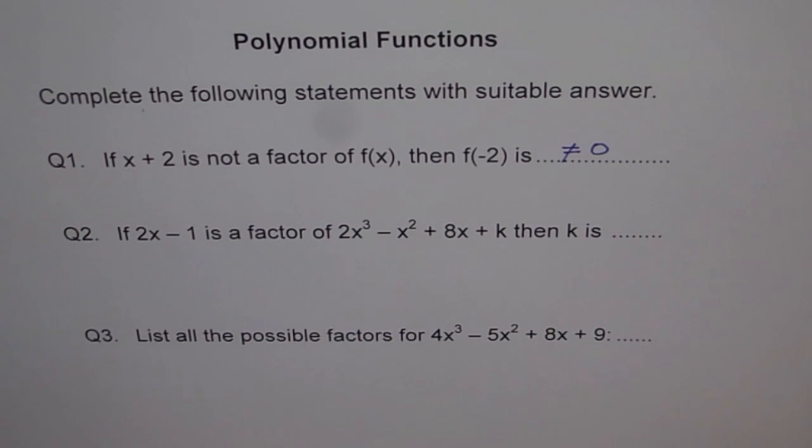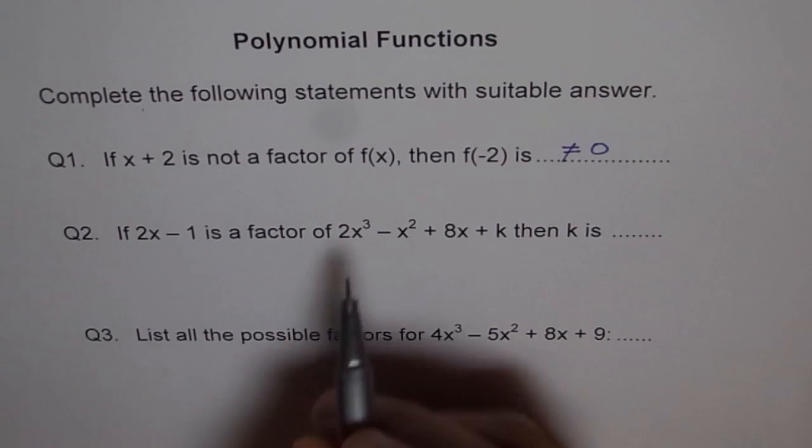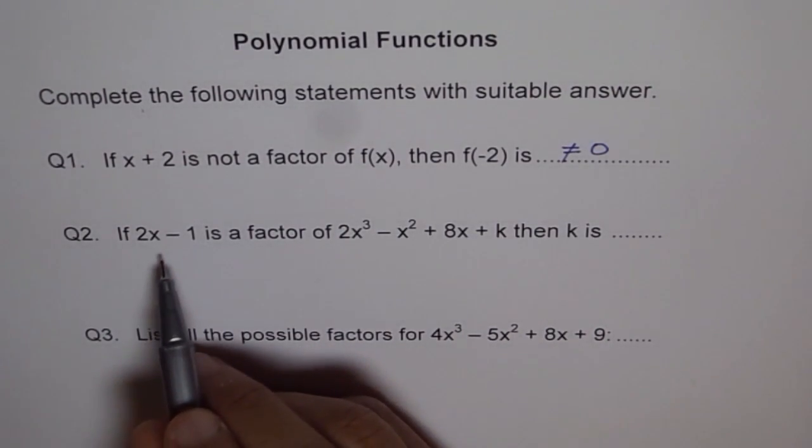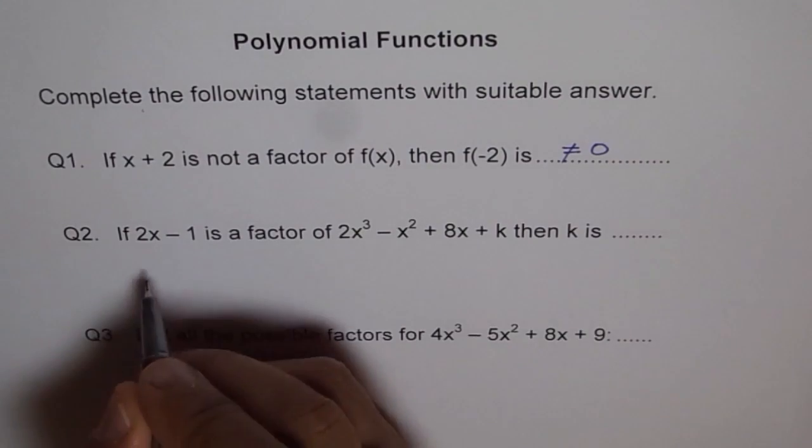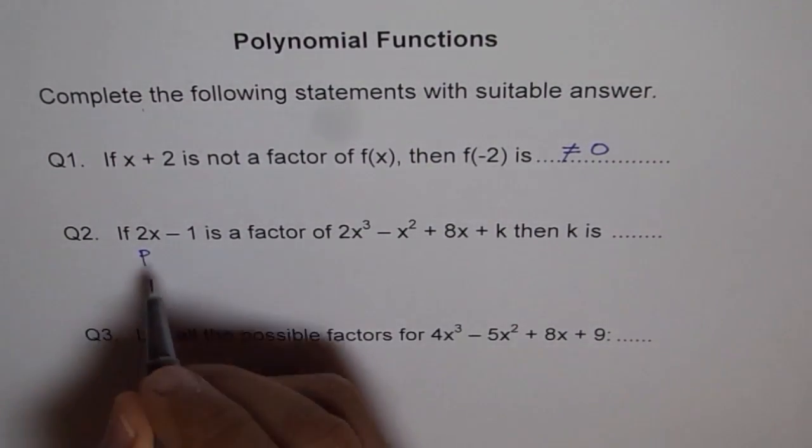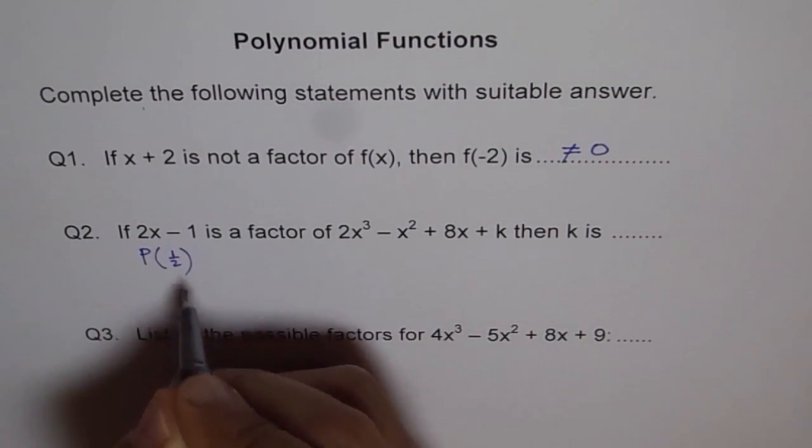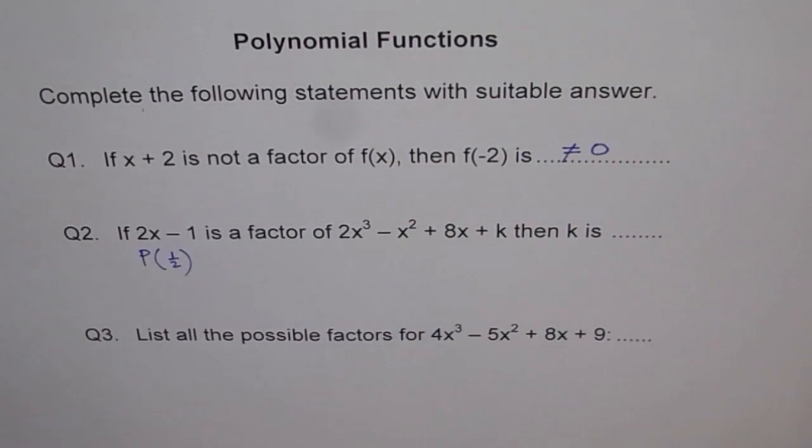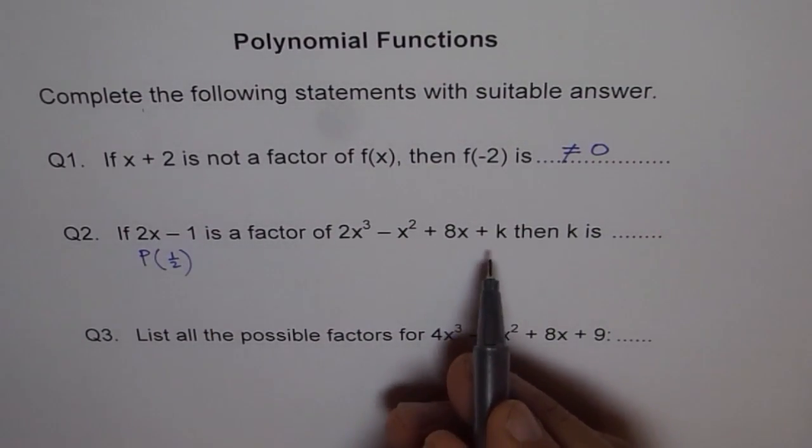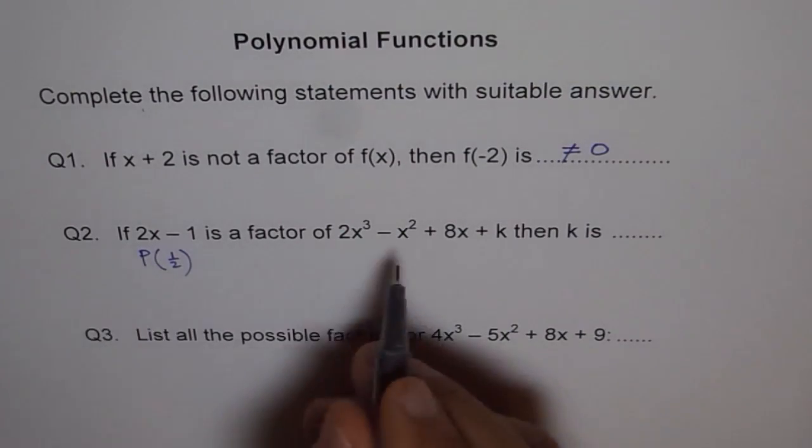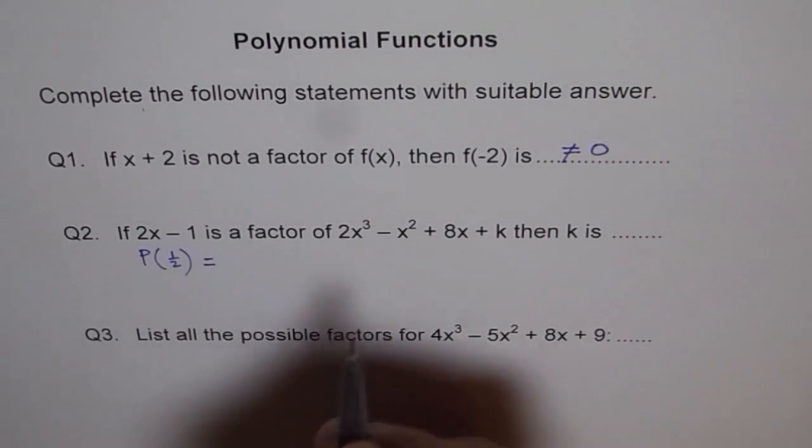Question 2: If 2x - 1 is a factor of 2x³ - x² + 8x + k, then k is what? Well, that polynomial, and this is a factor, that means if I plug in 1/2 here, then I should get 0. That is how I can find the value of k. Let's put 1/2 in this polynomial expression and then let's see what we get.